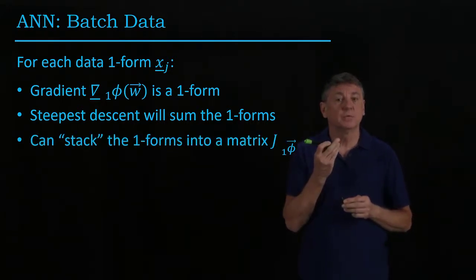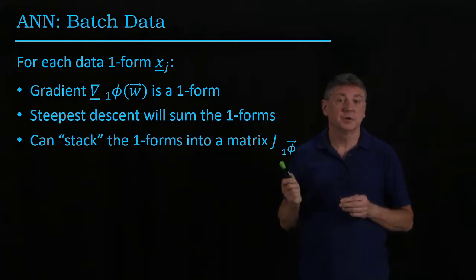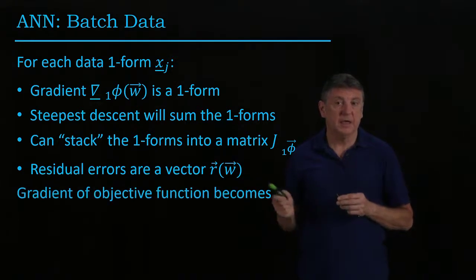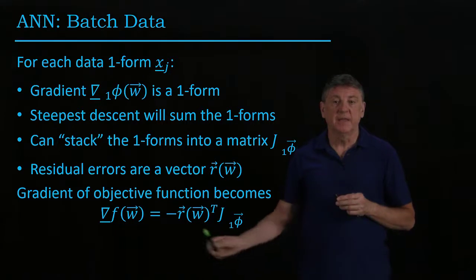This means that we can stack the one-forms into a single matrix that's a Jacobian matrix for the output layer. The residual errors will be a vector, and the gradient of the objective then becomes...